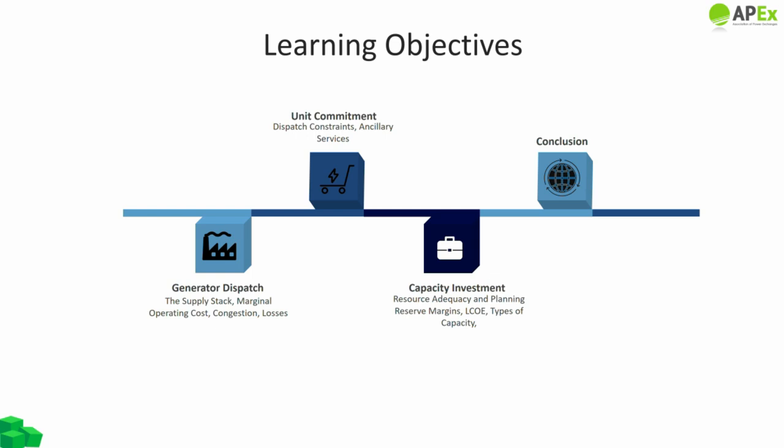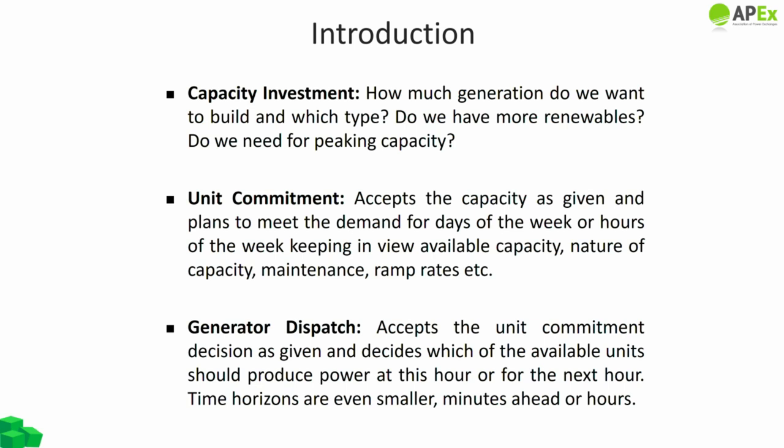After completing today's session, we should be able to describe the supply stack and explain the typical role of each type of electrical generator in it. We'll discuss unit commitment in an ideal world and impose certain constraints on power system operations. We'll summarize unit commitment and explain the impact of different dispatch constraints. We'll describe resource adequacy and planning reserve margins, relate these to decisions to invest in new generation capacity, and define, interpret, and calculate the levelized cost of electricity.